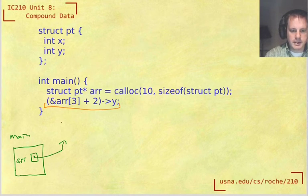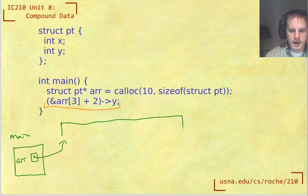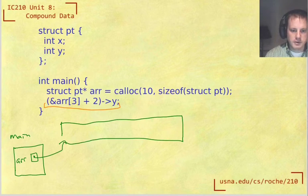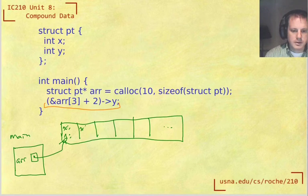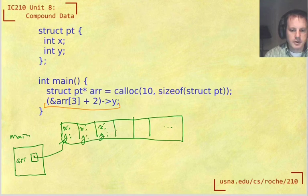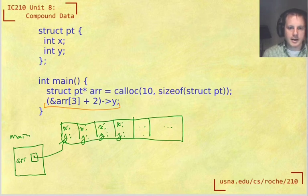And it's actually a pointer to a heap allocated array of a bunch of struct PTs. So each of these things in the array, and there's 10 of them, each of these has an x and a y value.